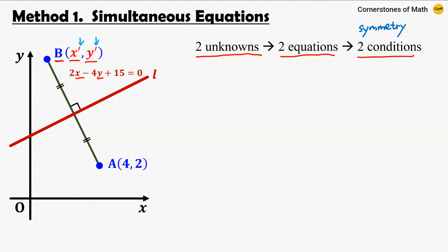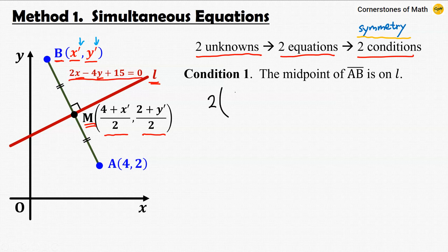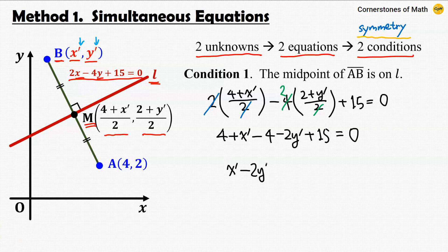Both conditions come from the symmetry. First, let us consider the midpoint of line segment AB, which is point M. Due to the symmetry condition, this midpoint M must be on the given line — that's the first condition. The coordinates of the midpoint are (4 plus x-prime)/2 and (2 plus y-prime)/2. These coordinates must satisfy the equation of line L: 2 times (4 plus x-prime)/2 minus 4 times (2 plus y-prime)/2 plus 15 equals 0, which simplifies to x-prime minus 2y-prime equals minus 15.